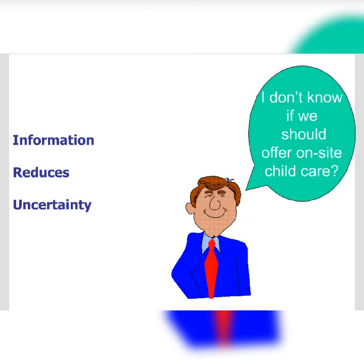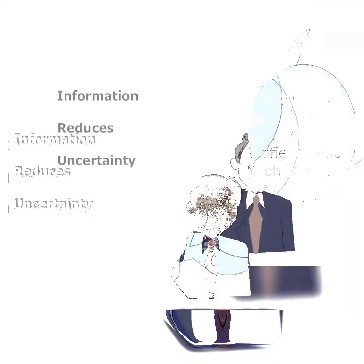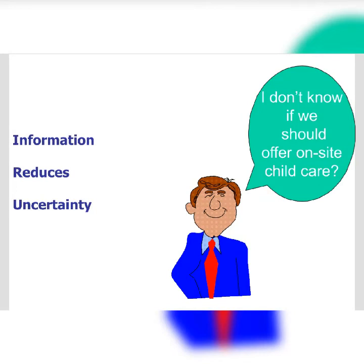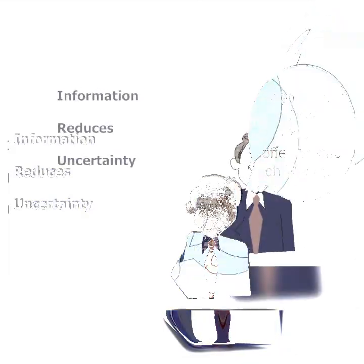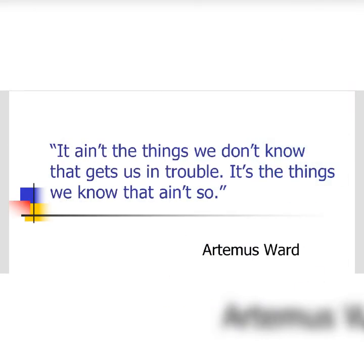Usually business people, the managers, need to make decisions. To make any sort of decision, someone needs information. Some information is reliable and some is unreliable. Whenever we make any kind of decision, there is uncertainty involved. Through reliable information, that uncertainty can be reduced.